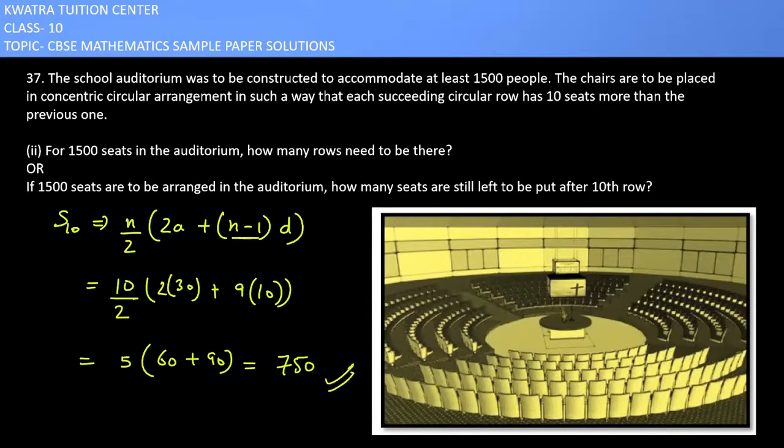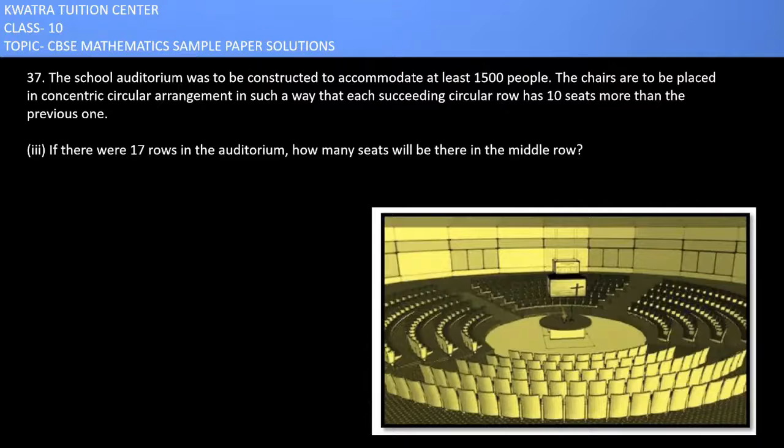750 seats are there in the auditorium up to 10 rows. The number of seats required would be 1500 minus 750, which is 750. So yes, 750 seats are required after 10th row.